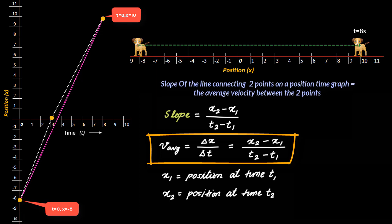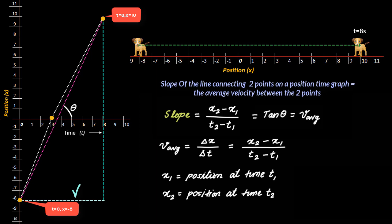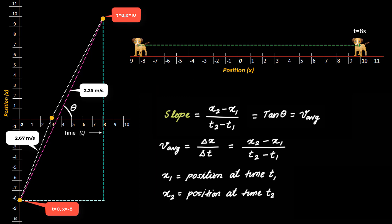The greater the magnitude of the slope, the higher the average velocity. If you recall trigonometry, another way to write the slope of a line is by taking tan of the angle the line makes with the horizontal axis. So if this angle is theta, then tan theta equals the slope, which equals the average velocity. Toto's average velocity between 0 and 3 seconds was 2.67 meters per second, and between 0 and 8 seconds was 2.25 meters per second. Visually, the line connecting t equal to 0 and 3 seconds is steeper than the line connecting t equal to 0 and 8 seconds.